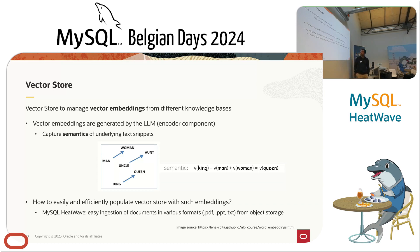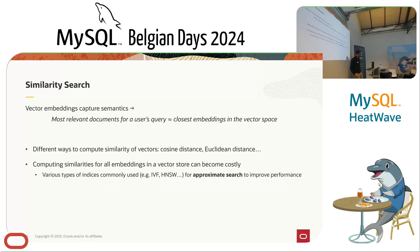The last ingredient is similarity search. Since the vector captures semantics, the most relevant document for a user query is simply the one with the closest vector embedding in vector space. There are different ways to compute vector similarity — cosine distance, Euclidean distance — so it's better to think of adding options. It's also important to remember that computing similarities requires comparing the query against all vectors in the store, which can become costly. So various types of indices are commonly used to speed up similarity search at the cost of some approximation.